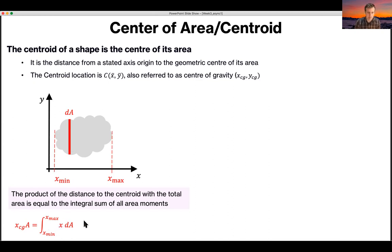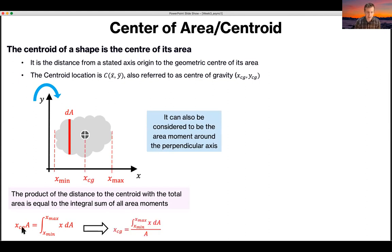And then if you solve that, you can solve for the moment CG, XCG. So you can consider it as a sum of individual moments around the perpendicular axis. And then if you want to get the actual XCG, you have to divide through by the area.